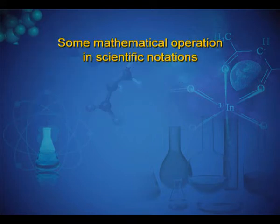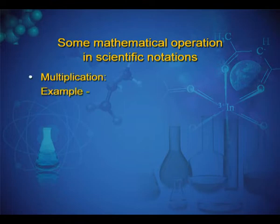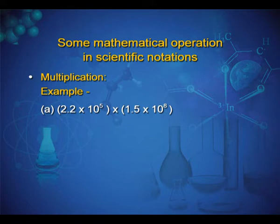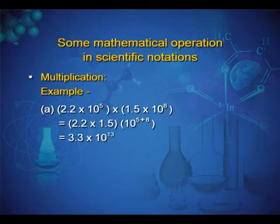Some mathematical operations in scientific notation, like multiplication: we have to multiply 2.2 × 10^5 with 1.5 × 10^8. We will first multiply the coefficients like 2.5 × 1.5 and add the exponents like 10^5+8. So it will be 3.3 × 10^13.